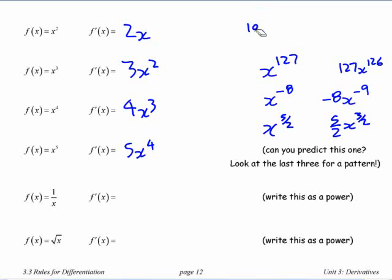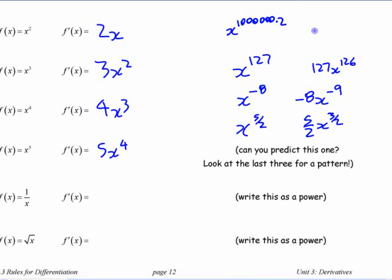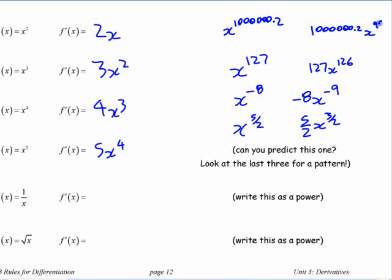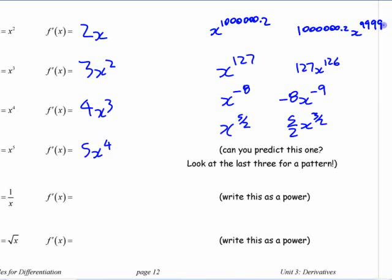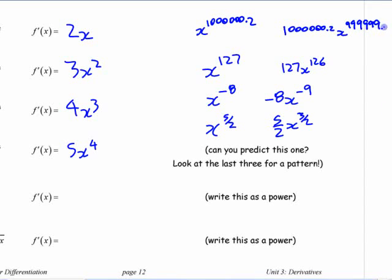You had x to the 1,000,000.2. Its derivative is, we need a bit more space here. 1,000,000.2 times x to the 999,999.2. Doesn't give me much more space at a time here.